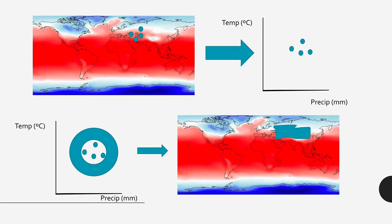Basically, you have the environmental layer, you have your points, and you extract the information at the location of your points — here is 15 degrees, here is 18, here is 20, here is 17. You do the same with precipitation: here is 200 mm, here is 250, here is 300, here is 400. Based on your points you build your niche, you construct a model, and then you project the model back onto the map to find all the places that have 17 degrees and 200 mm of precipitation — those places are inside the niche of the species.